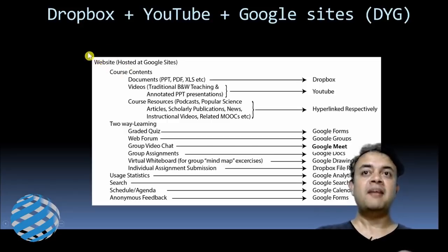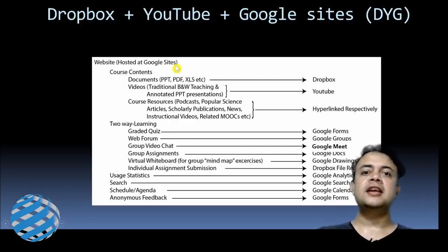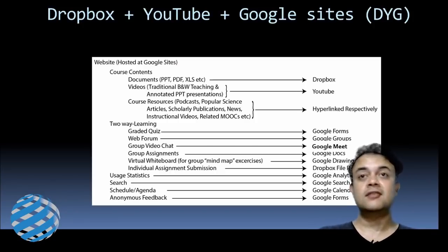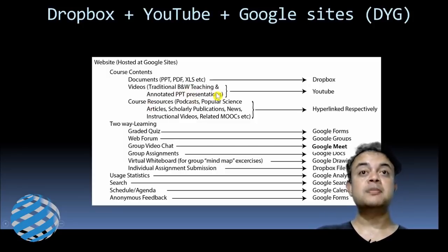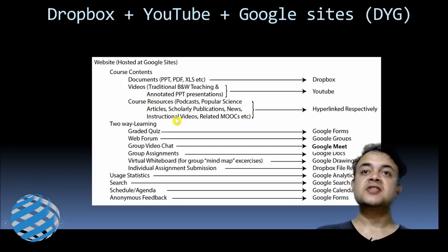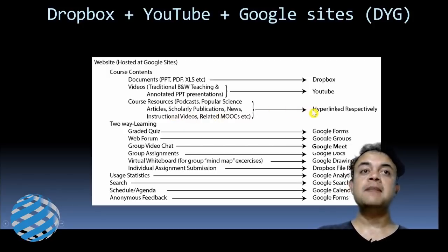You need a website hosted on Google Sites, which is a totally free server — it's as simple as composing a Google Doc or posting a message on Facebook. Course contents like documents, PPT, PDF, and XLS files are stored in Dropbox. Videos — traditional blackboard teaching plus annotated PPT presentations with voice overlay — are stored on YouTube. Course resources like podcasts, popular science articles, scholarly publications, and news can all be hyperlinked inside Google Sites.